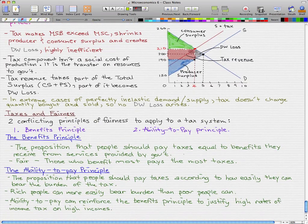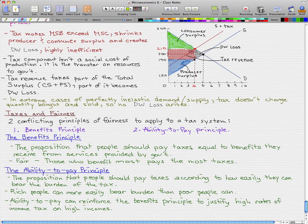We'll end with taxes and fairness, because we always do fairness. When political leaders debate tax issues, it is fairness, not incidence and efficiency, that gets most attention. Economists have proposed two conflicting principles of fairness to apply to a tax system.